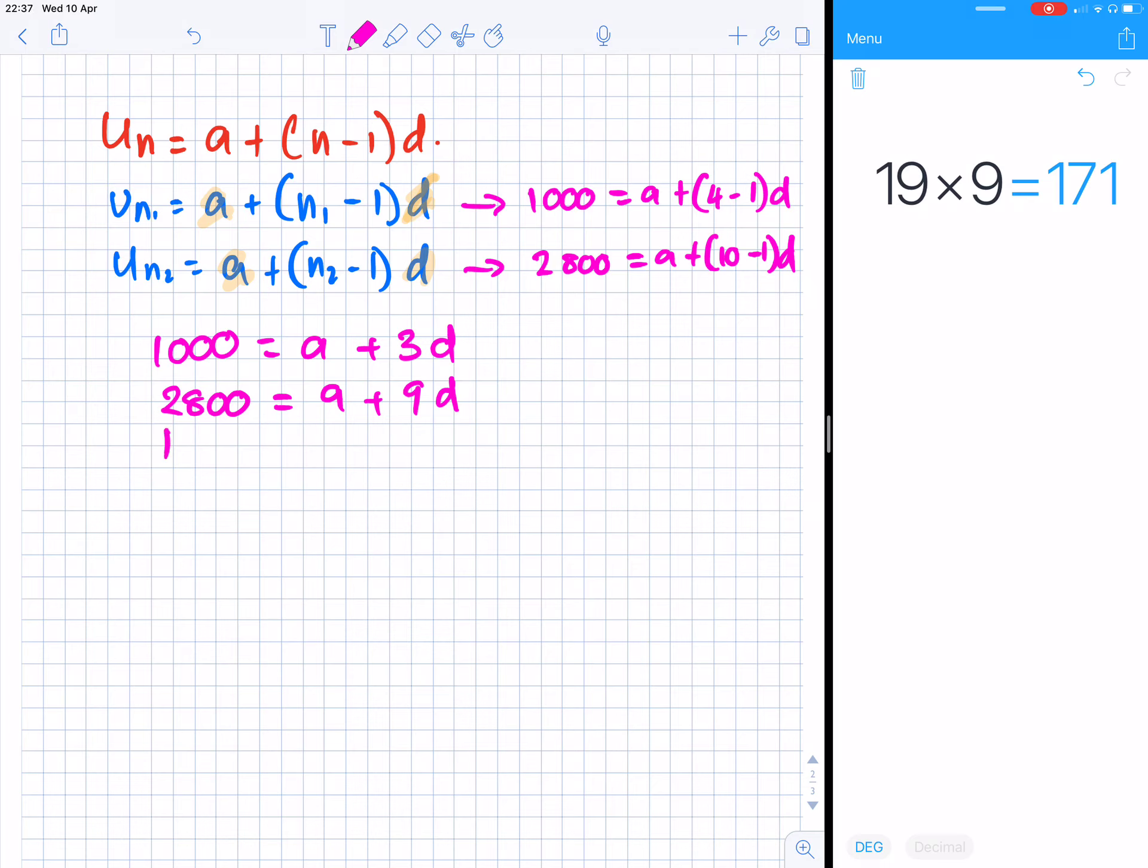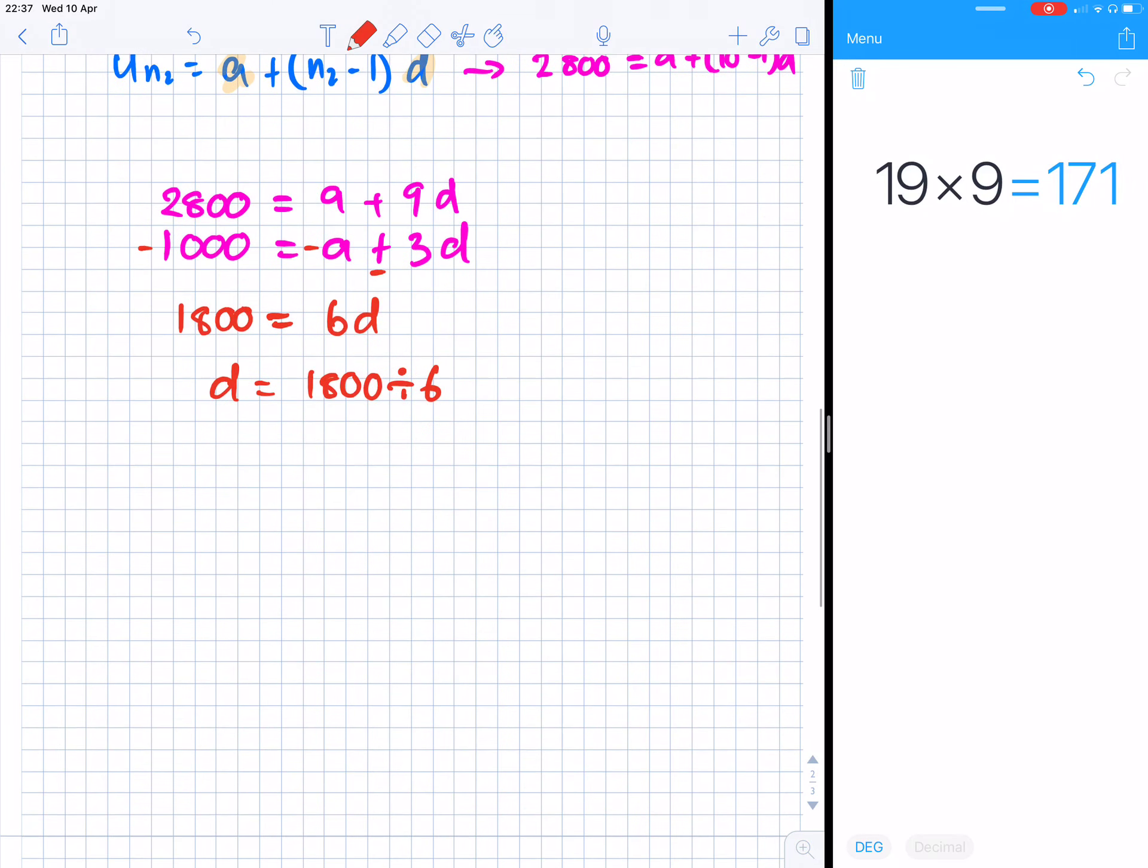To make it easier to subtract, I'm going to write the first equation here. I'm just going to put a minus, minus, and a minus. This becomes 1800. 1800 is equal to, the a's go, and that's equal to 6d, which means d is 1800 divided by 6, which makes it 300. So d is 300.